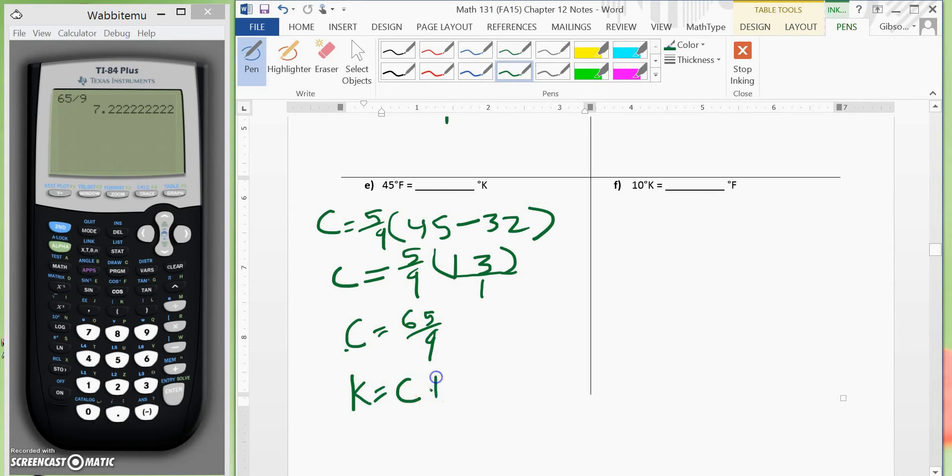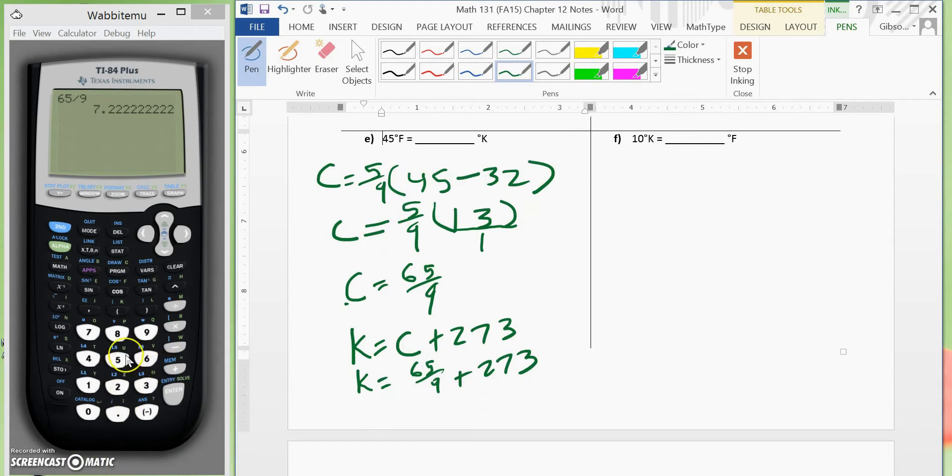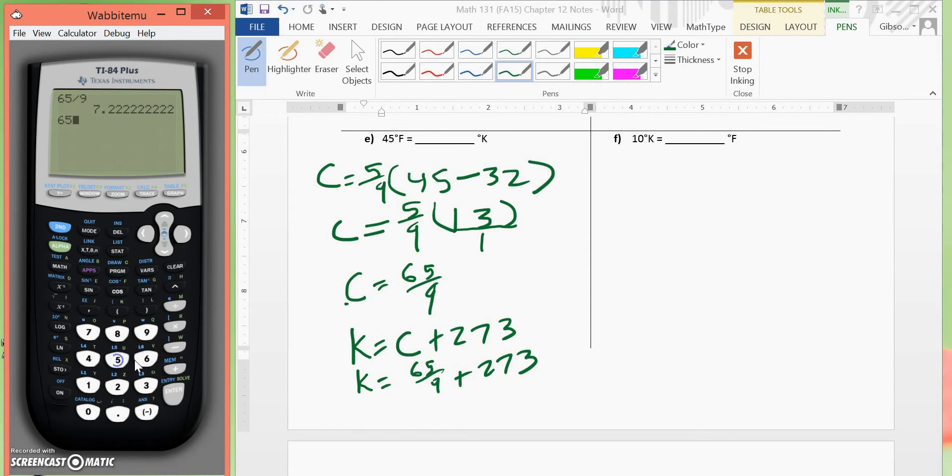Now what we need to do is change this to kelvins. Kelvin is equal to Celsius plus 273 degrees. So we will substitute in the Celsius which is 65 over 9 plus 273.